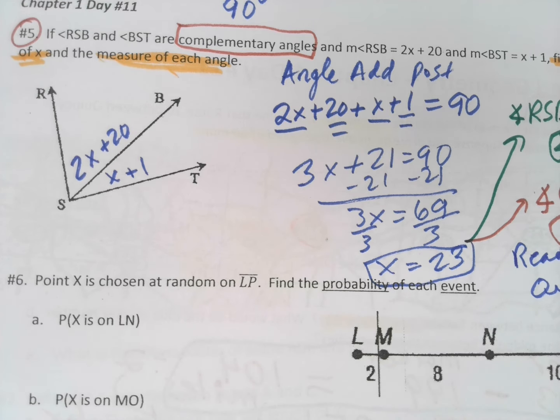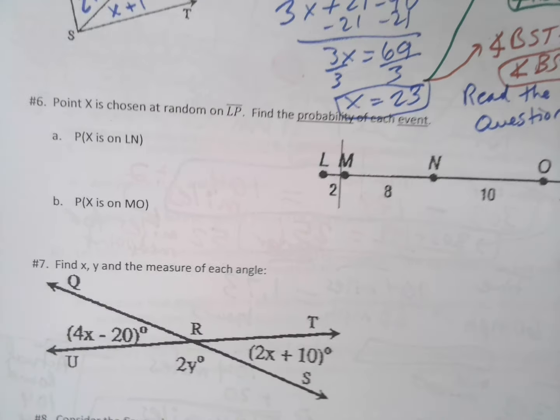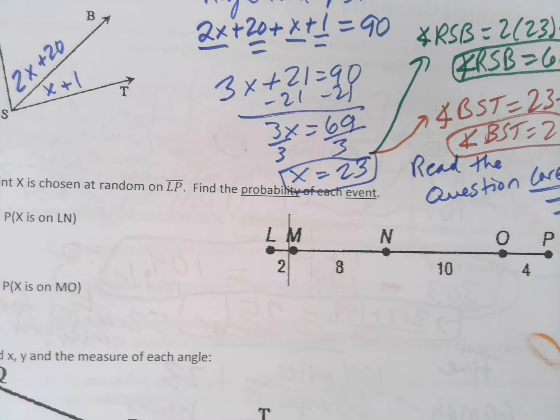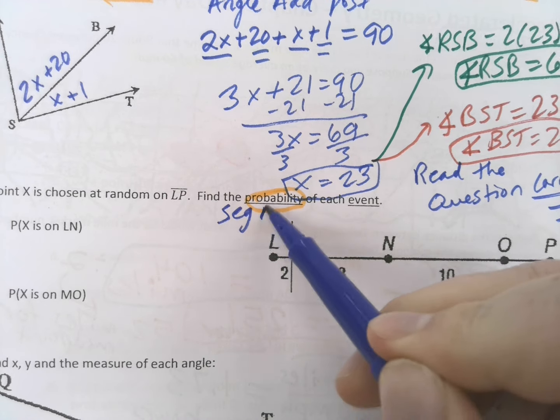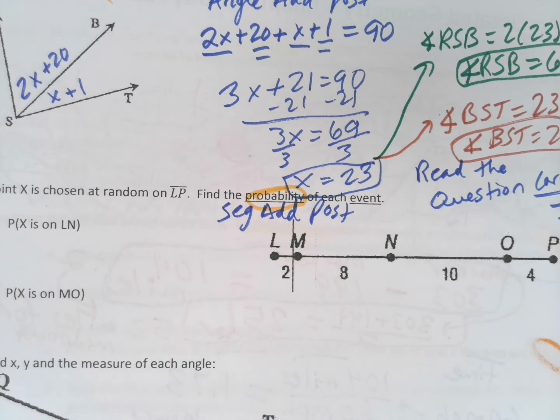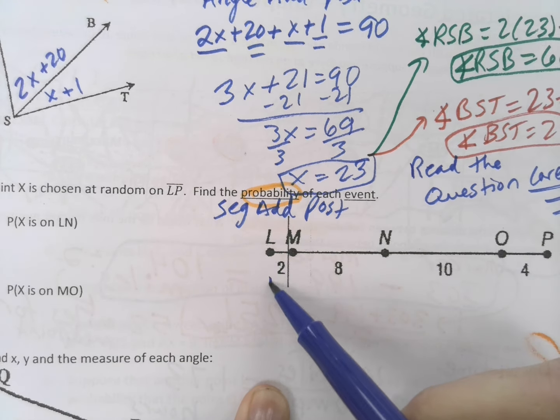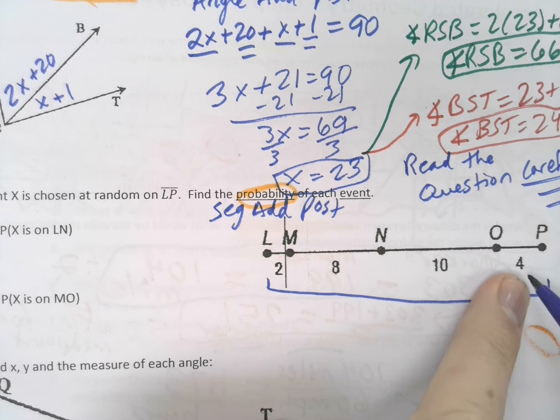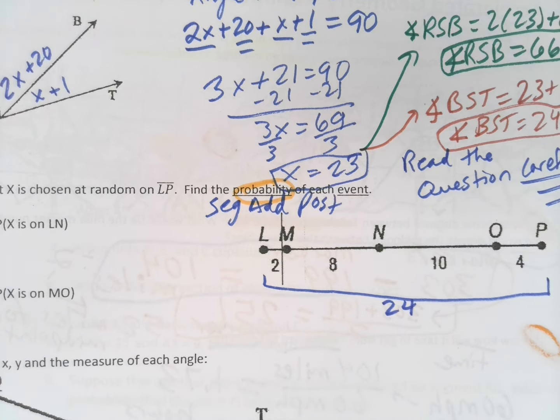In my opinion, one of the toughest problems we're going to do today is number six. Let me zoom out a little bit so you guys get a better picture here. We've got to be just super careful on this one. This one involves probability, but it also involves segment add postulate as well. So, be careful. Be very, very careful. The good news is we know each of the pieces. If we know each of the pieces from L to P, 2 plus 8 is 10, 10 plus 10 is 20, plus 4, we know this is going to be 24 units long. So, that's helpful.